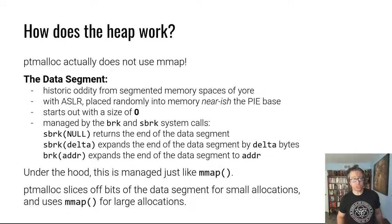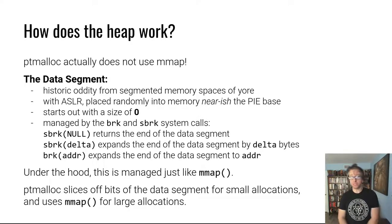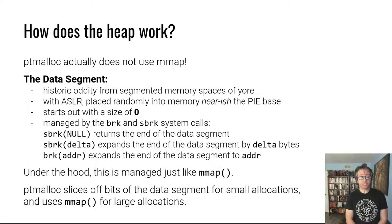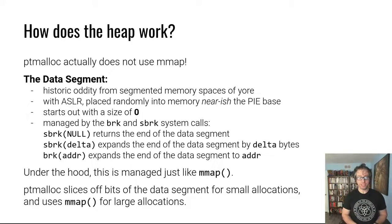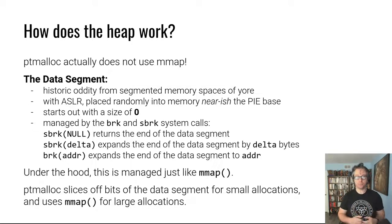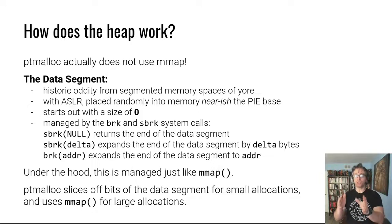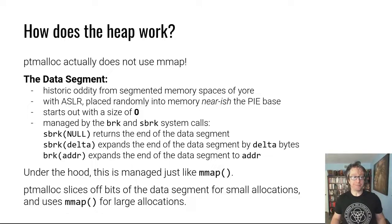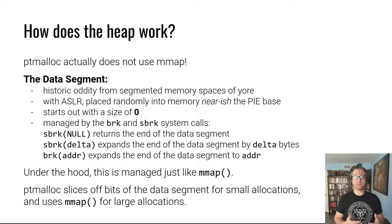How does the heap work? Our hypothetical dynamic allocator from the beginning of this lecture worked by memory-mapping something and splitting off chunks. Interestingly, ptmalloc does not use mmap — it uses what is called the data segment. The data segment is a historical oddity from very old times, pre-AMD64, when memory space was heavily segmented and you had a segment just for data. Nowadays it's been co-opted into the heap.